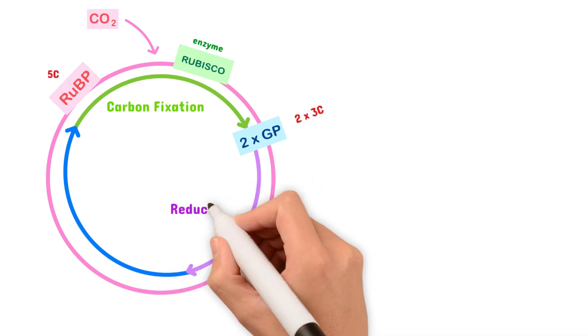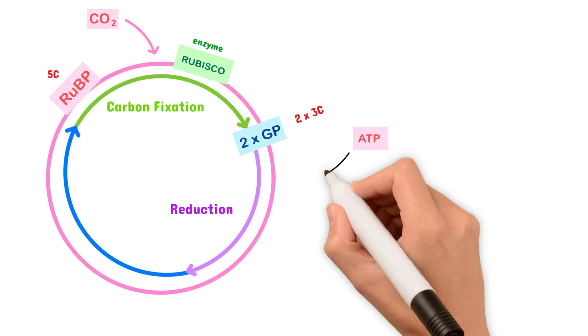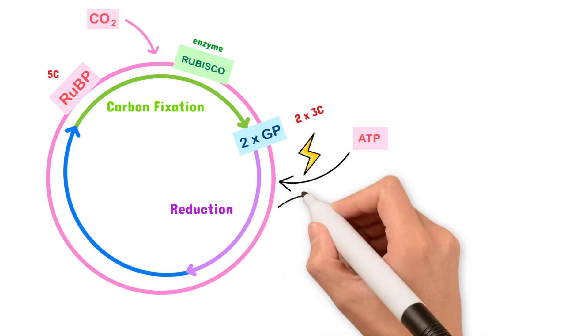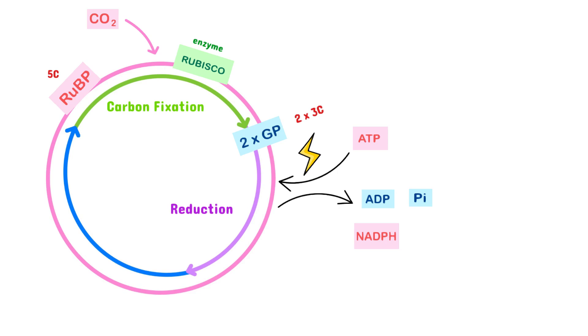The next stage is known as reduction. In this stage, ATP is used to provide energy, releasing back ADP and a free phosphate group, and NADPH is used to provide a hydrogen ion, releasing back NADP. Energy and the hydrogen ion are used to turn the two GP compounds into two compounds of GALP, which also each contain three carbons.